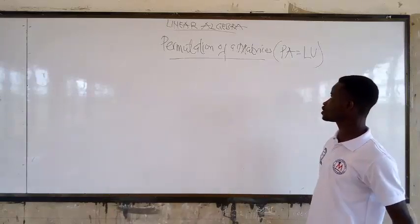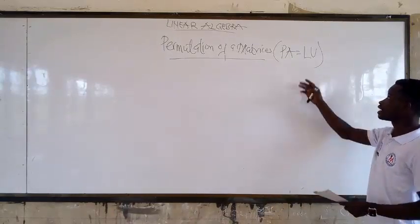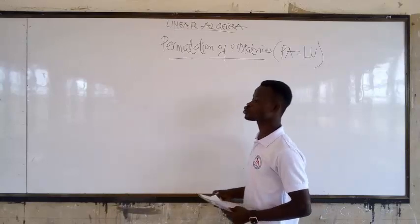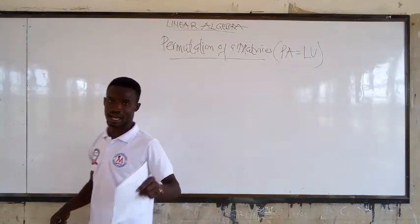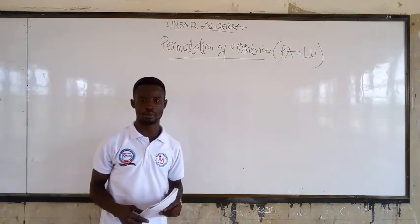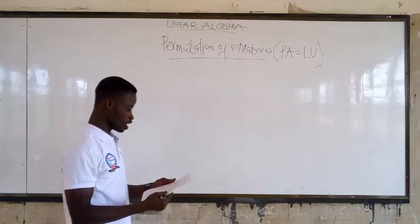Here we are — permutation of matrices. That is PA being equal to LU. So when we say that, what do we mean? Let's see how we are going to go about such questions.